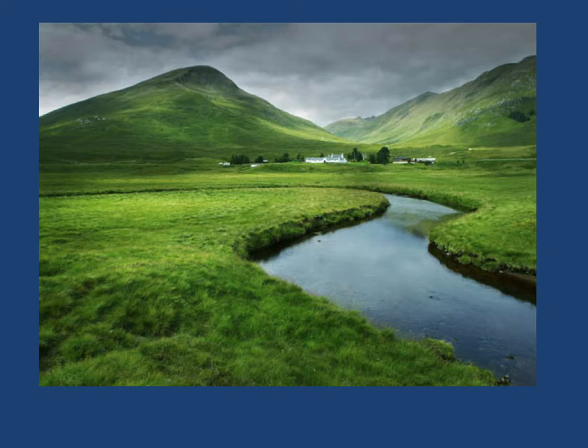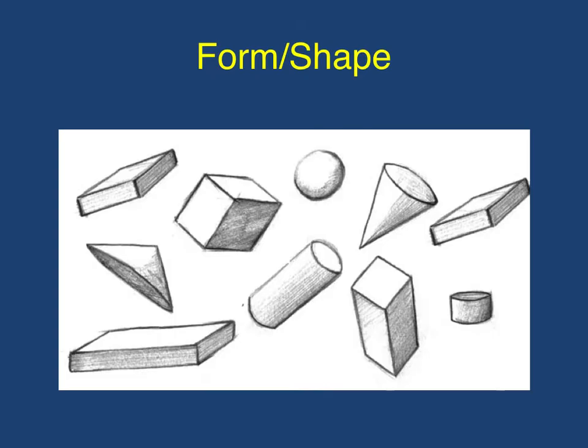When we talk about the composition of an artwork, we are talking about how the different elements are put together. The next one we are going to look at is form. Form is simply the shape of an object within the composition — it constitutes the space defined by the line. In two-dimensional art, you cannot separate form from line. If I asked you to draw a square without using a line, this would be an impossible task.